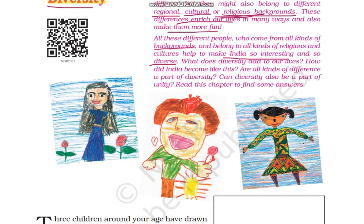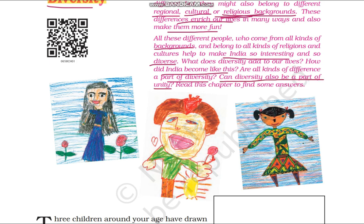Ab is chapter mein, Understanding Diversity mein, hum kaafi saare questions par gaur karenge aur unke answers dhundhne ki koshish karenge. Jaise ki: what does diversity add to our lives — yeh jo differences hain, kya humari lives mein contribute karti hain, inka humari lives per kya impact hai. How did India become like this — India mein itni saari differences kaise aayi, India itna diverse country kaise bana. Are all kinds of differences a part of diversity — ya sabhi tarah ki jo differences hain, wo diversity ka part hain. And can diversity also be a part of unity — kya yeh jo differences hain, yeh jo diversity hai, kya woh ekta ka part ho sakti hai. So is chapter mein hum in sabhi questions ka answer dhundhne ki koshish karenge aur inko aur achhe se samjhenge.